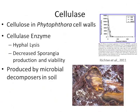Cellulase is an enzyme. Cellulose is in wood, and it's also in the cell walls of Phytophthora. Microbes release extracellular cellulase enzymes that chop up the 1,4 beta-glucosidase bonds in cellulose, then absorb those glucose units. It's been shown in the literature that increasing levels of cellulase activity can cause lysis of Phytophthora hyphae, decreased sporangia production, and decreased sporangia viability — so we're attacking both the hyphae and the sporangia with cellulase. Cellulase is produced by microbial decomposers in the soil.